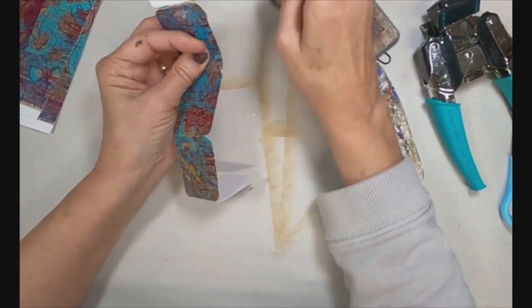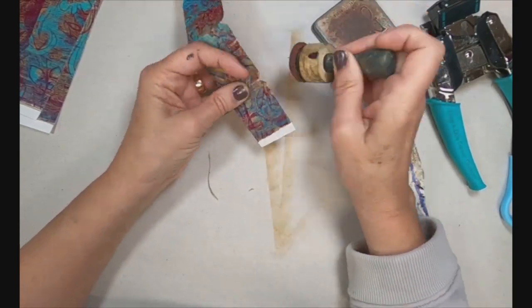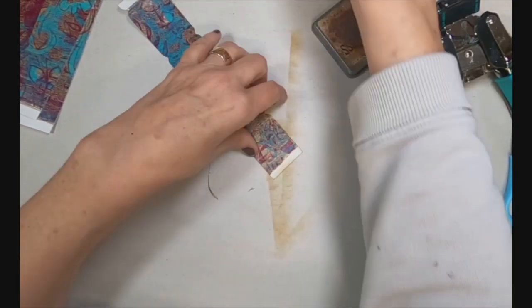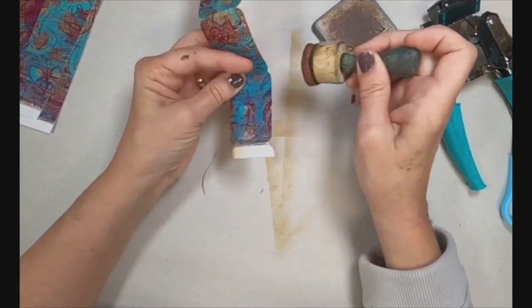And now to remove that white edge of the white cardstock, I'm going around the outside edge with vintage photo and just inking it up.